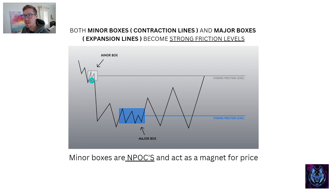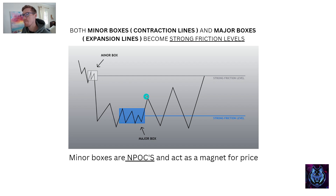As you can see, price squeezes — lower high, higher low — and forms our contraction box. Price breaks out in a direct-leg expansion, forming only a contraction line, which becomes a strong friction level. This stays a minor box. Then we get another lower high and higher low forming a contraction box, but price breaks above and below, which forms a major box. This also becomes a very strong friction level.